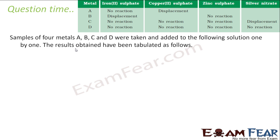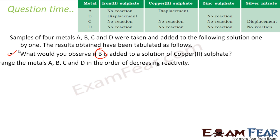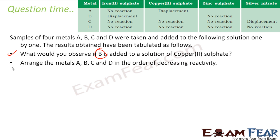A sample of 4 elements was taken and added to various solutions. The results: A plus FeSO4 — no reaction, meaning A is less reactive than iron. A plus copper sulfate — displacement occurs, meaning A is more reactive than copper. So the order so far: iron is above A, and A is above copper.